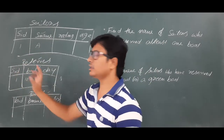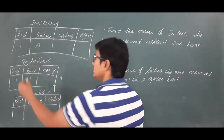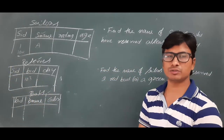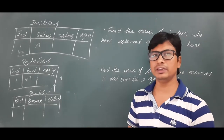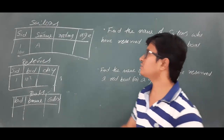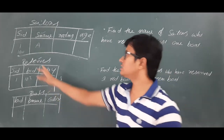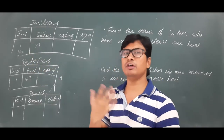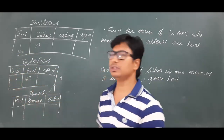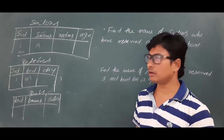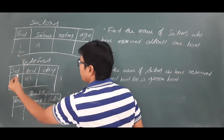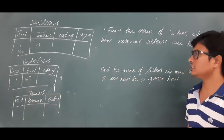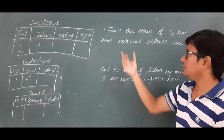If a sailor whose ID is 100 has reserved at least one boat, his ID will be present in the reserves table. If someone has not reserved any boat, his ID will not be in the reserves table. So if a sailor has reserved some boat, his SID value will be in the reserves table — that information is useful for identifying the relational algebra expression.